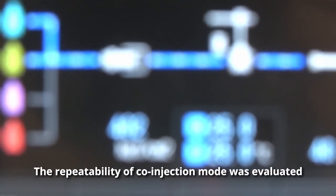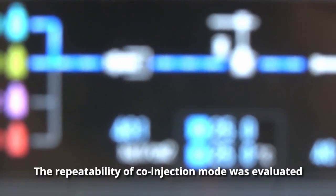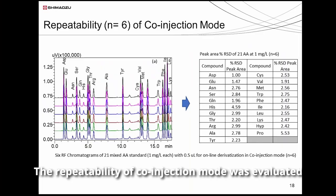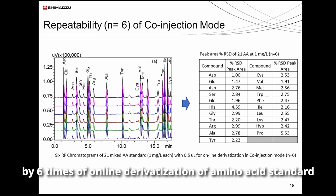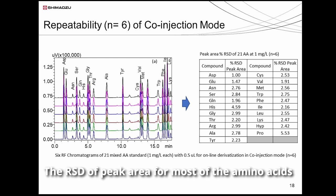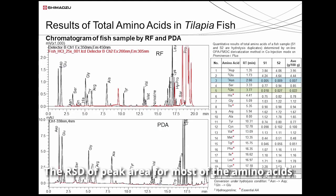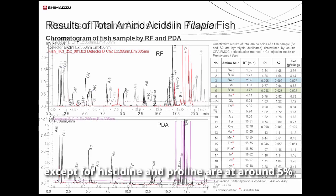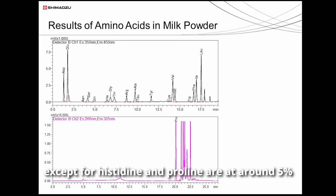The repeatability of the co-injection mode was evaluated by six repetitions of online derivatization of amino acid standard. The RSD of peak area for most amino acids is lower than three percent, except for histidine and proline, which are at around five percent.